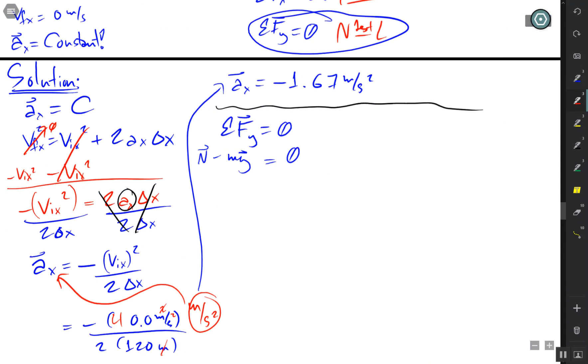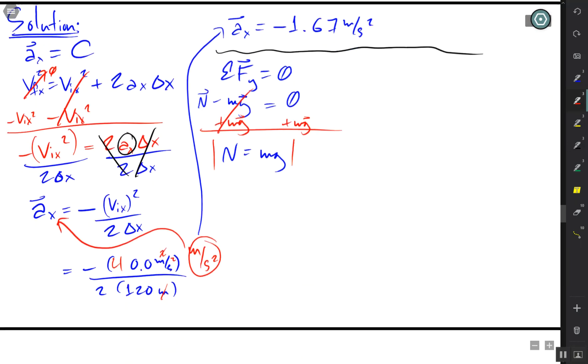So it's going to be normal force going up minus the weight going down equals zero. Now, if I move the second term to the other side, I'm just going to write the magnitudes.